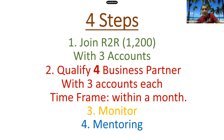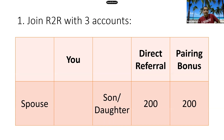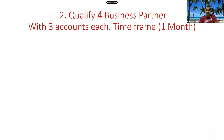So join R2R with three accounts — you are the main account, then you enroll your spouse, son or daughter. The plan remains: 200 referral, and there's also a pairing bonus of 200. Nothing changes in that. This is just the system so we have something to follow to make our earning easier. Step 2: Qualify four business partners, with three accounts each. Time frame: one month.